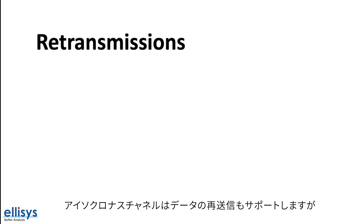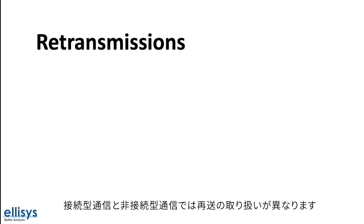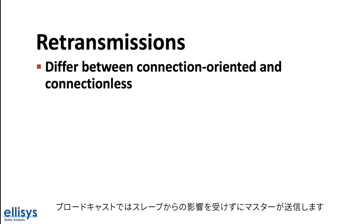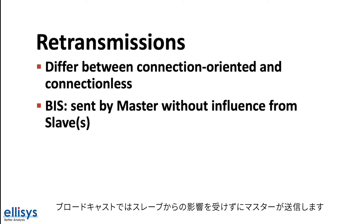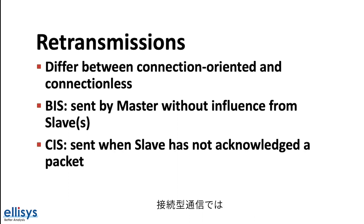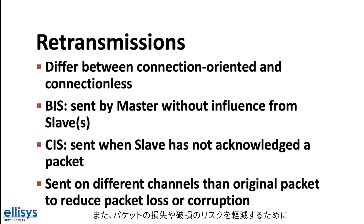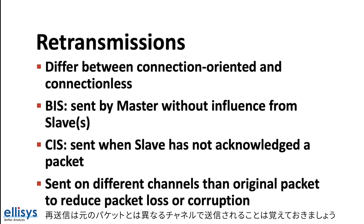Isochronous channels also support data retransmissions; however, they differ between connection-oriented and connectionless communication. In the case of broadcast isochronous streams, retransmissions are sent by the master without influence from the slave or slaves. In the case of connected isochronous streams, retransmissions are sent when a slave has not acknowledged a packet. Also note that retransmissions are sent on different channels than the original packet in order to reduce the risk of packet loss or corruption.